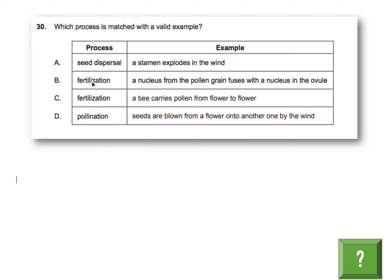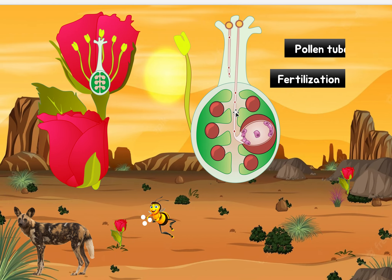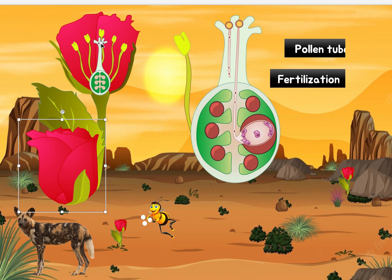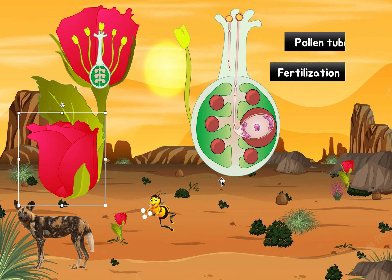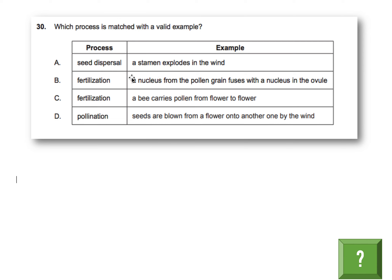Option B is fertilization — a nucleus from the pollen grain fuses with a nucleus in the ovule. This is true. Looking at the flower opened up, we know it has male and female parts. The male anther makes pollen and transfers it to the female stigma. The pollen grows a tube down, the DNA travels down and reaches the ovule, which has the female DNA, and they fuse — that creates a new plant. That's what fertilization is: the male and female parts meeting. So it's B.